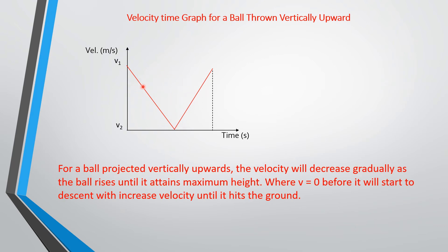For a ball projected vertically upwards, the velocity decreases gradually as the ball rises until it attains maximum height where V equals zero, before it starts to descend with increasing velocity until it hits the ground. At this point the ball hits the ground. This is the velocity-time graph for that particular type of motion.